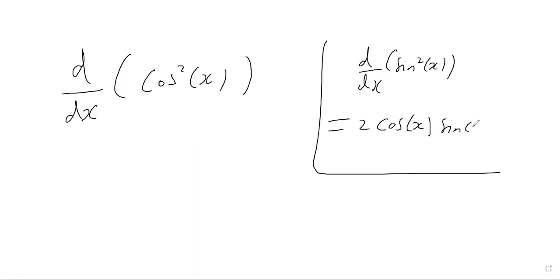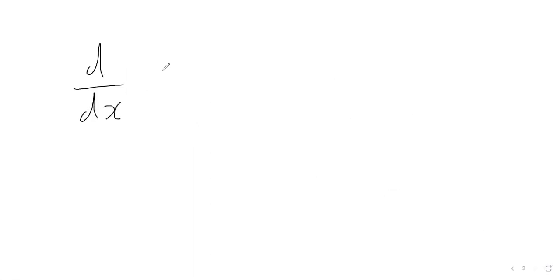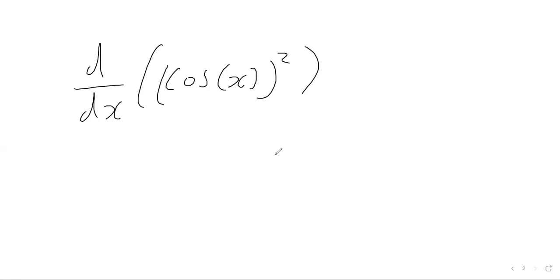So this is a very similar procedure for when we want to calculate the derivative of cos squared. What we're going to do is rewrite it just to emphasize that this is the cos function all squared. We have the cos function within the squared function, which is essentially a function of a function, meaning we need the chain rule.